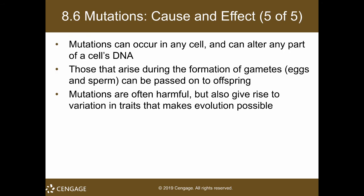Mutations can occur in any cell and can alter any part of the cell's DNA. Those that arise in the formation of gametes — which are the eggs and sperm cells — can be passed on to offspring. Mutations are often harmful, but they may also give rise to variation in traits. According to the theory of evolution, that is allegedly how organisms evolved.